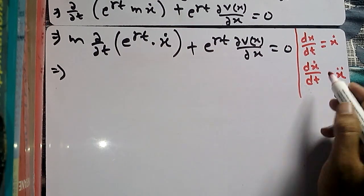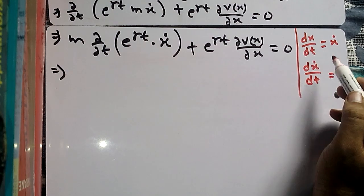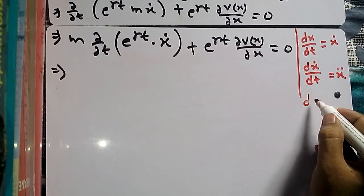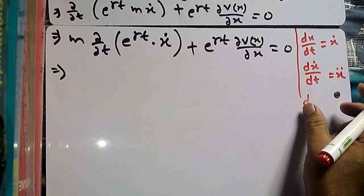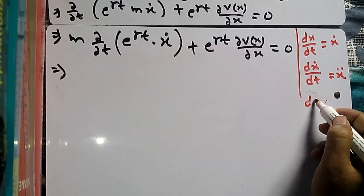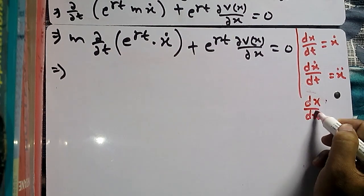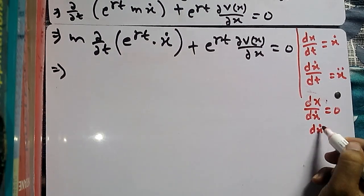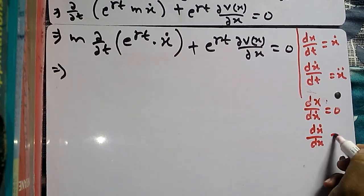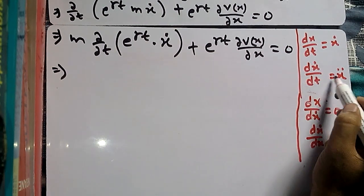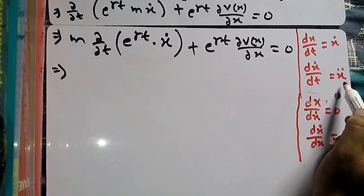Always remember: dx/dt = x-dot, and d(x-dot)/dt = x-double-dot. Also note that ∂x/∂(x-dot) = 0, and ∂(x-dot)/∂x = 0 — these are zero. But d(x-dot)/dt is not zero; it equals x-double-dot.